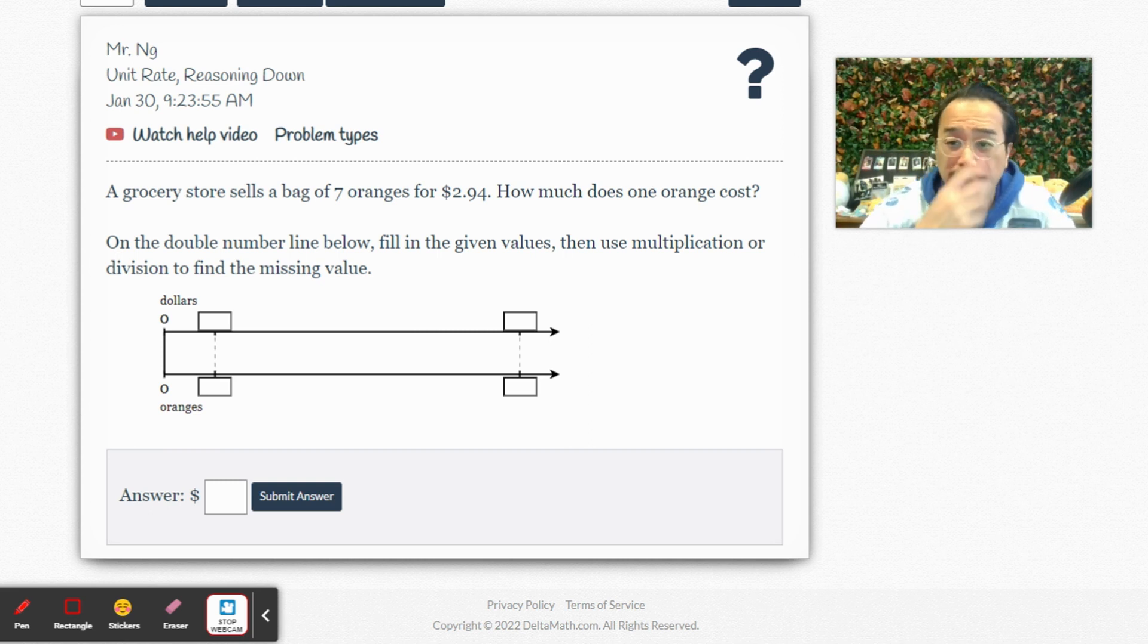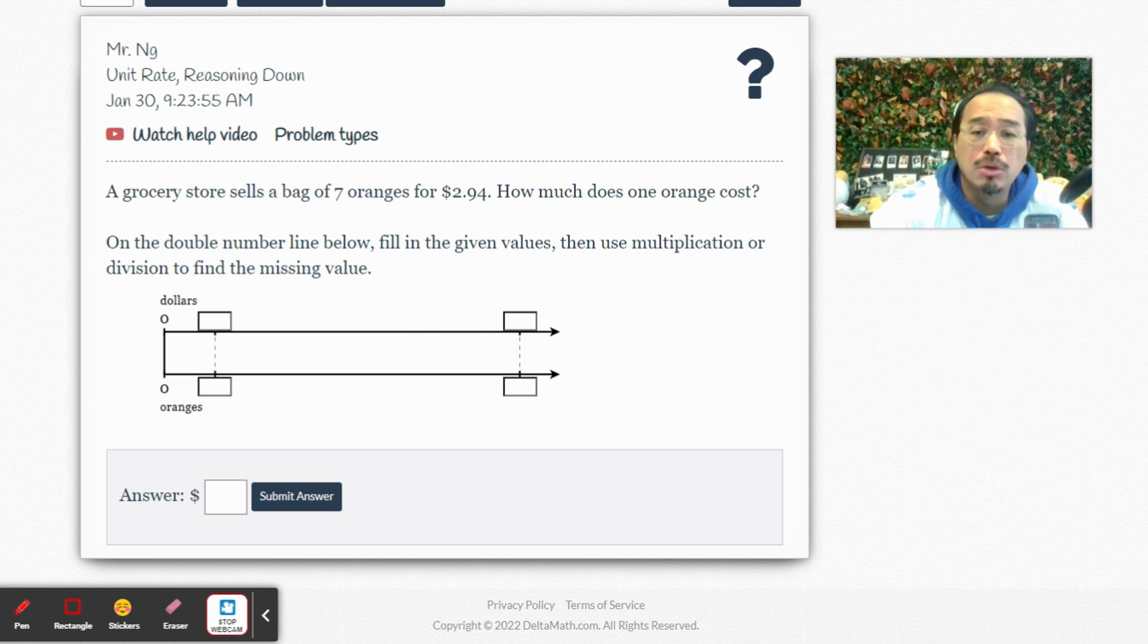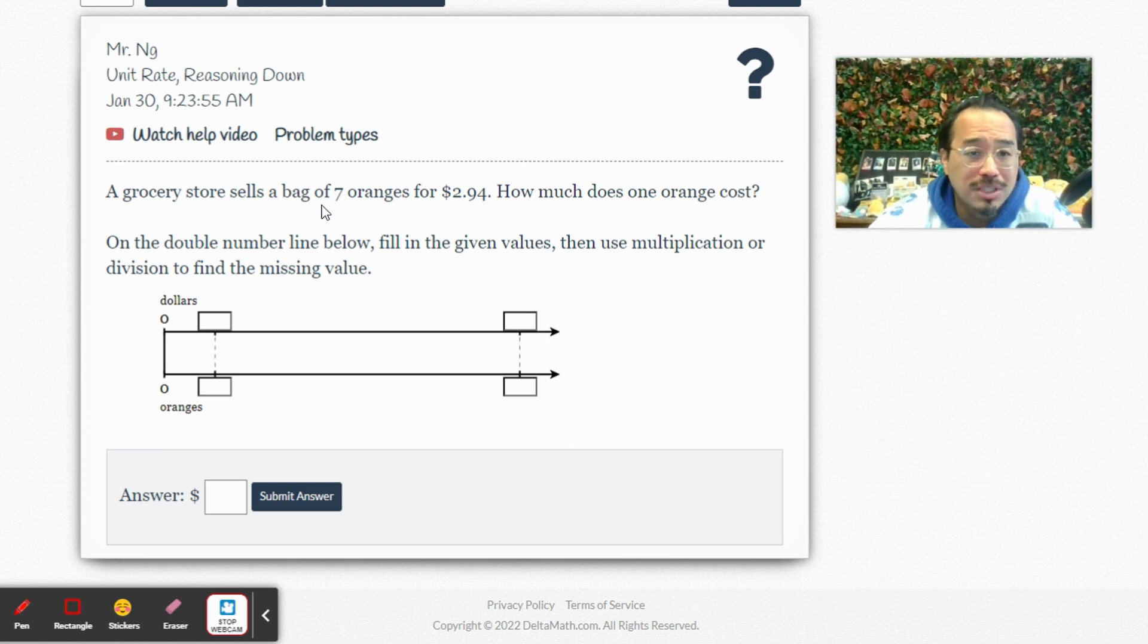All right, so let's see. A grocery store sells seven bags of oranges for $2.94. What does one orange cost? Now on the double number line below, there's a double number line - dollars up top represented by that number line and the second number line represents the number of oranges. So double line, fill in the given value, use multiplication division - no, we're gonna set a proportion, the unit rate proportion.